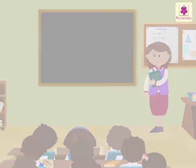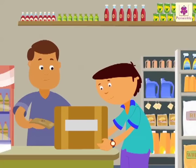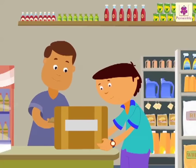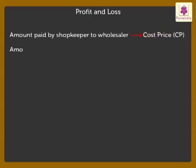Shall we start? Mr. D'Souza runs a departmental store. He buys goods at lower rates from the wholesalers, then sells these goods to customers at reasonably higher rates. The amount paid by Mr. D'Souza to the wholesaler is called the cost price. The short form of cost price is CP. The amount paid by the customer to Mr. D'Souza is called the selling price. The short form of selling price is SP.